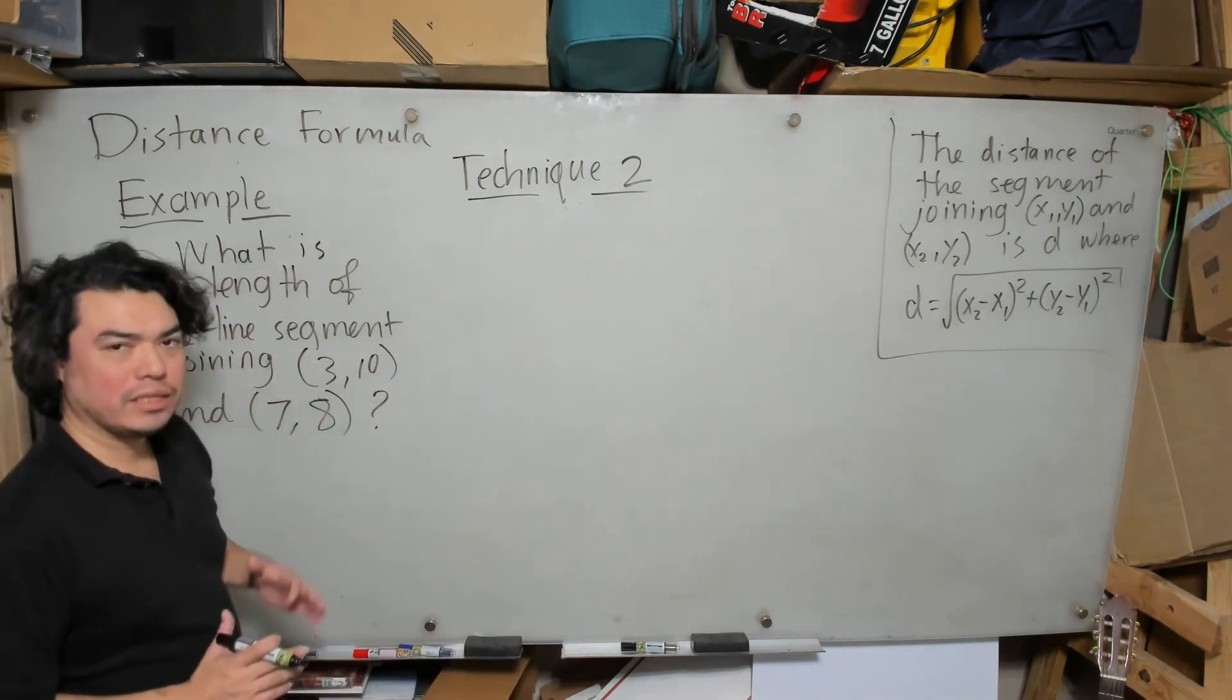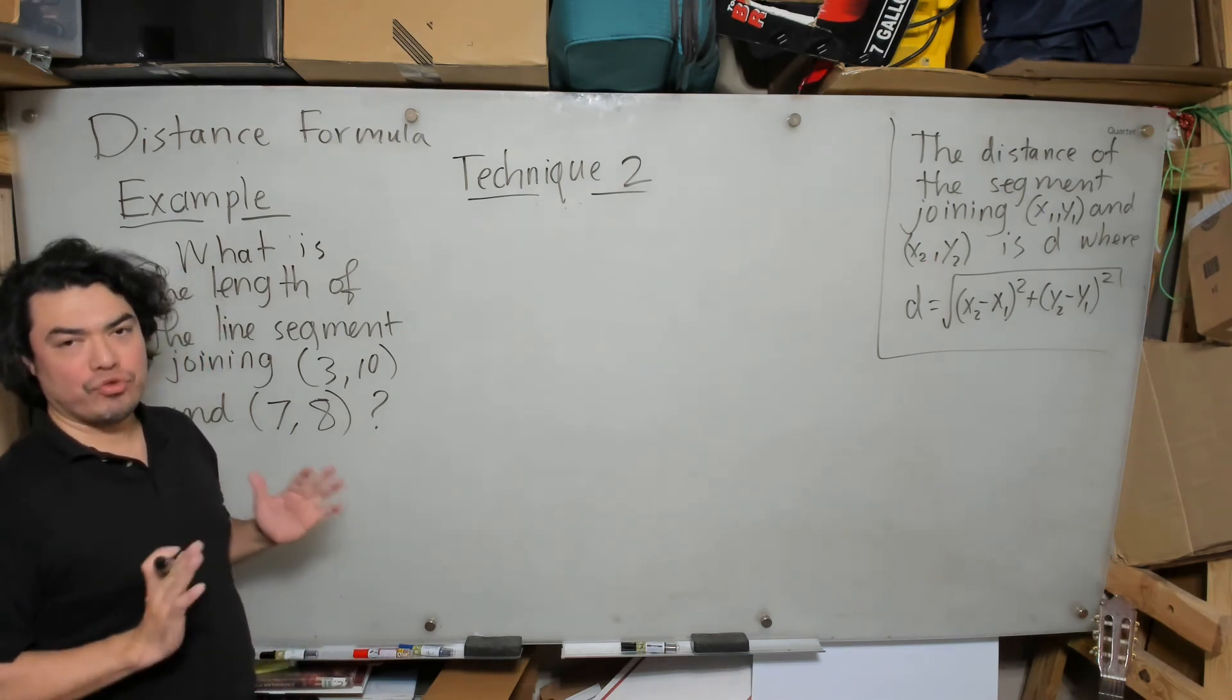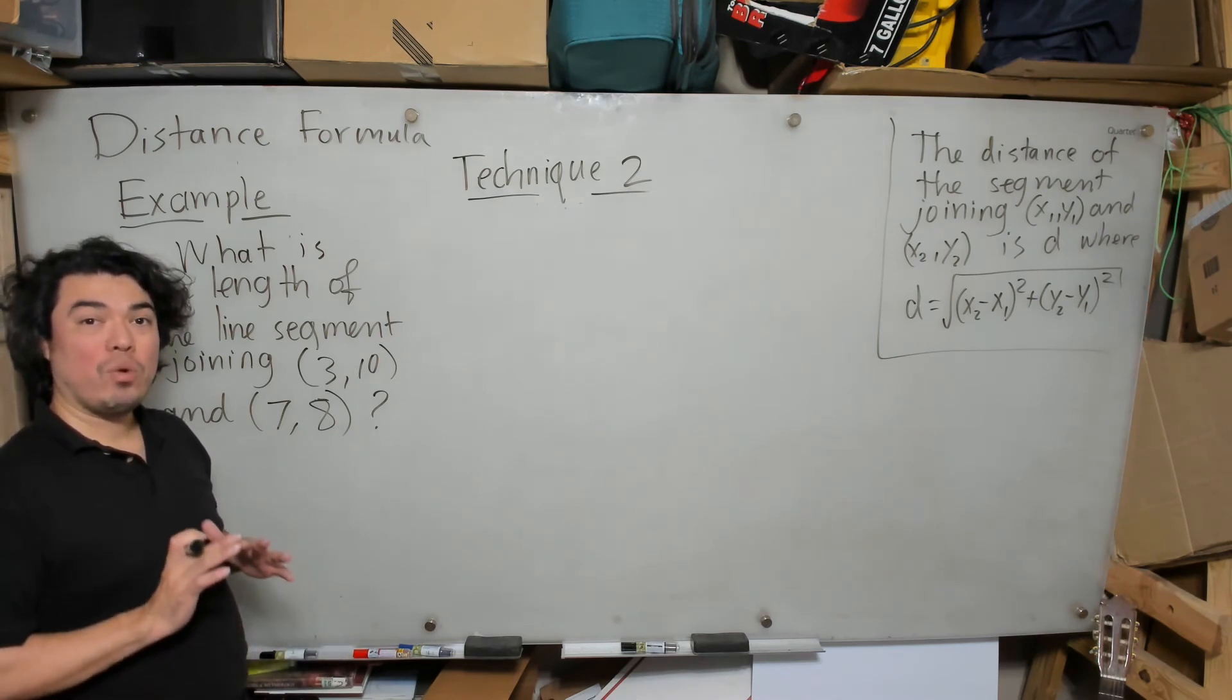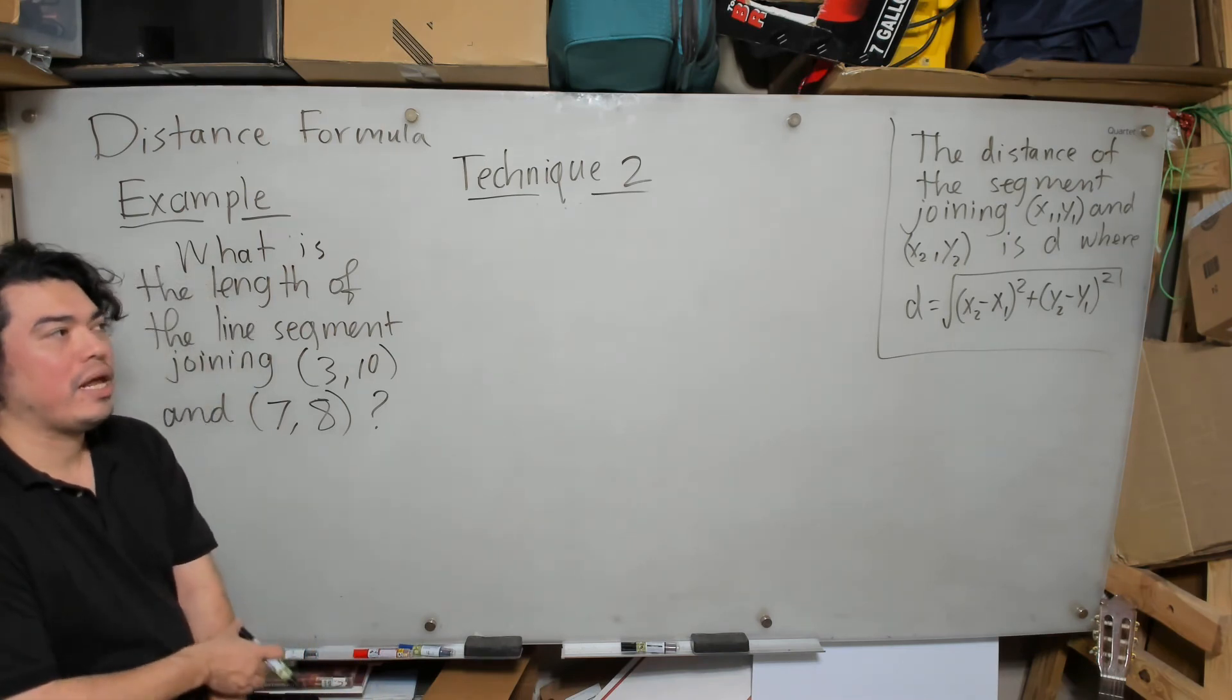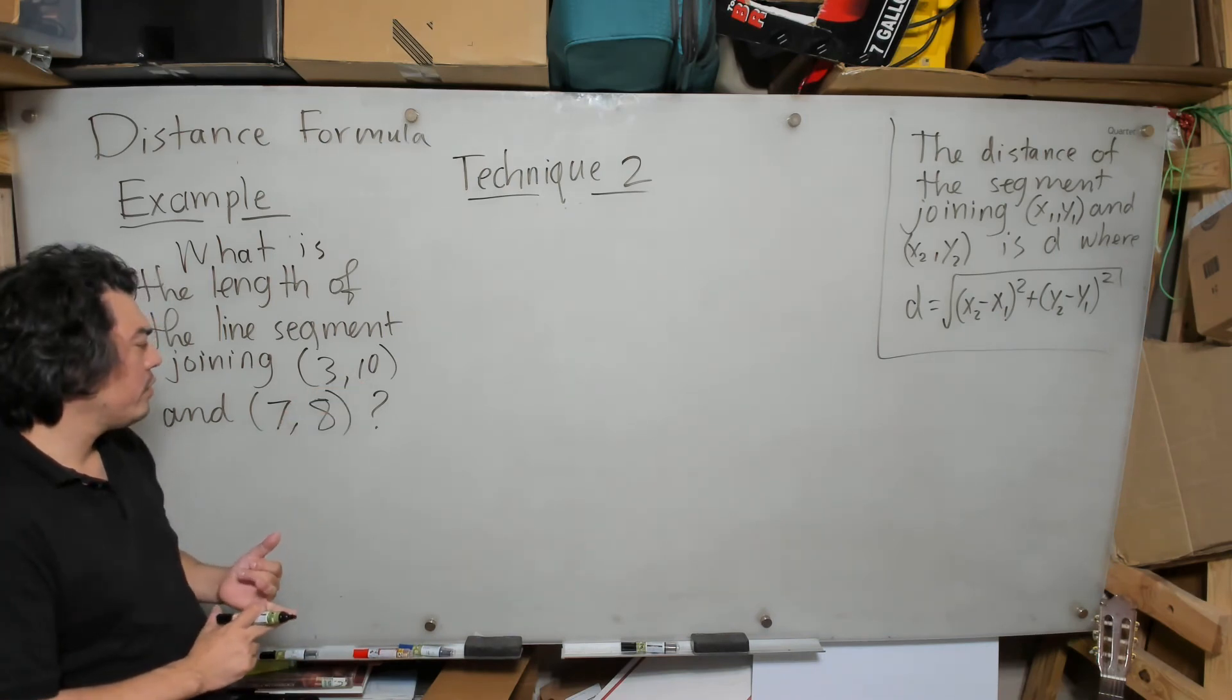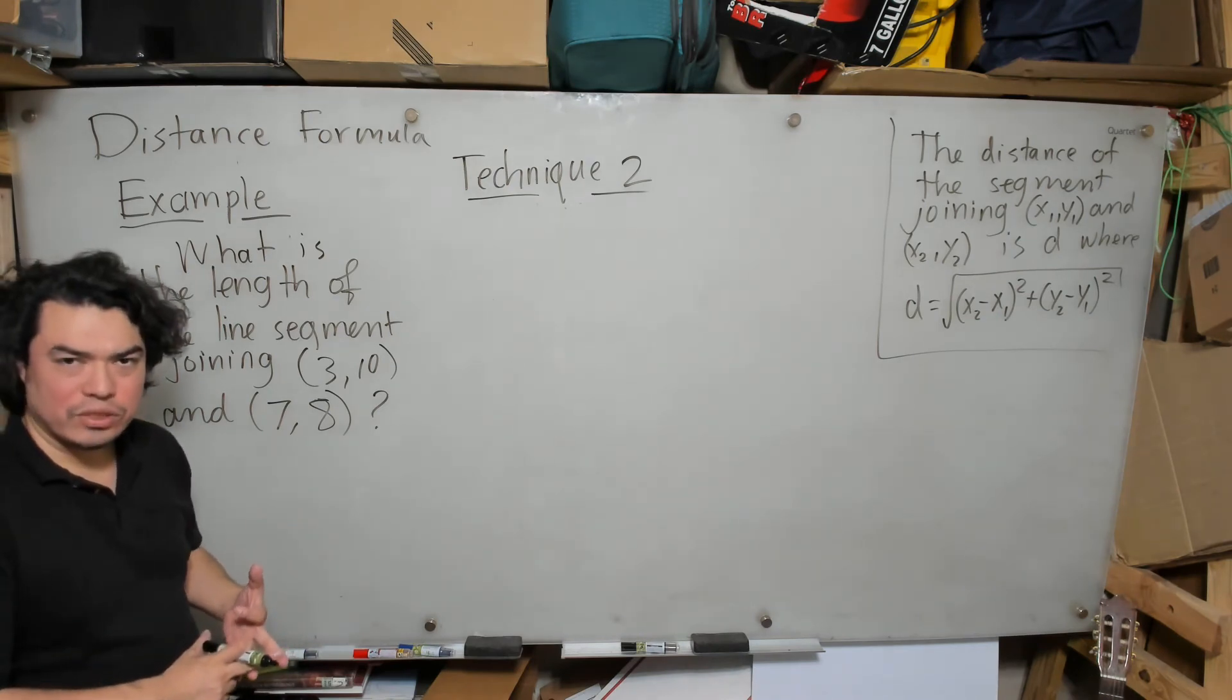Technique 2 is basically going to be that we're going to plot these points and form a right triangle, and then we're going to apply the Pythagorean theorem directly. Now, one of the things I want you to notice about whenever I'm going to graph something is that I try to be judicious about how much of the graph to show and where along the x-axis and y-axis I show.